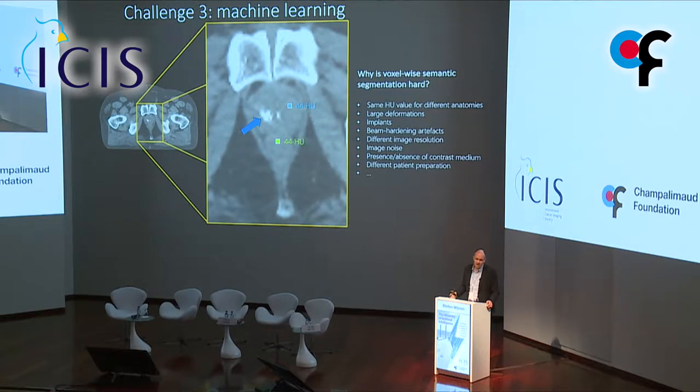The third challenge: is machine learning itself sufficient if we simply look at voxels to identify which organ we're trying to segment? The answer is no. Two voxels with exactly the same parameters is definitely not enough. We also have deformations, implants, image noise, different image resolutions — a lot that needs to be handled before we even start training the model.